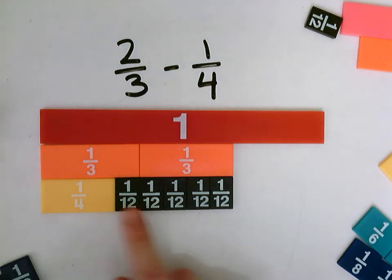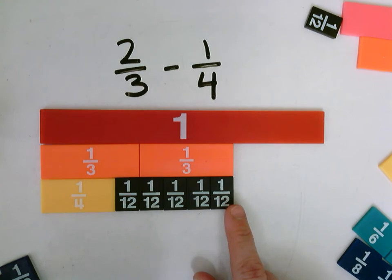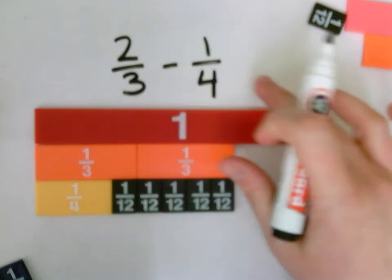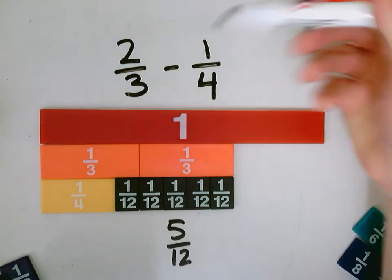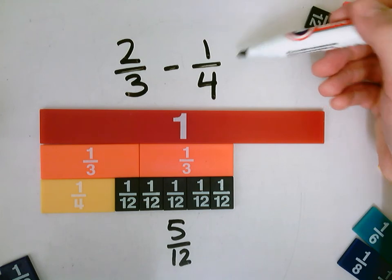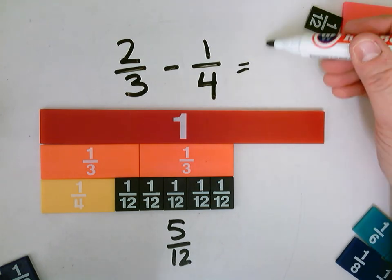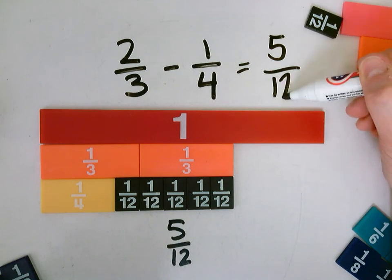All right, so it takes one, two, three, four, five twelfths to fill in the difference between two-thirds and one-fourth. So, we have five twelfths here. So, two-thirds minus one-fourth, the difference is five twelfths.